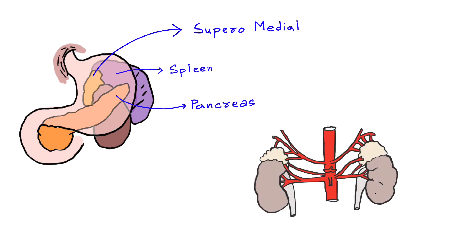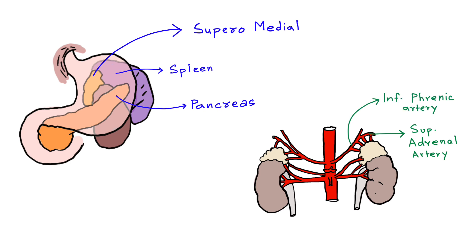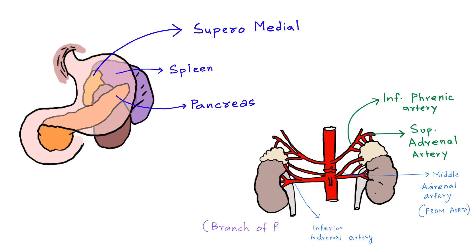Each adrenal gland is supplied by multiple small arterial branches from three main vessels. The superior adrenal artery is a branch of the inferior phrenic artery. The middle adrenal artery is a direct branch from the aorta. And the inferior adrenal artery is a branch of the renal artery.